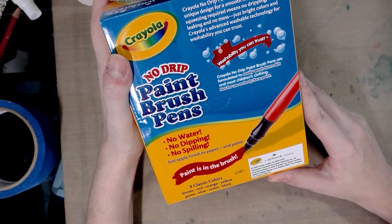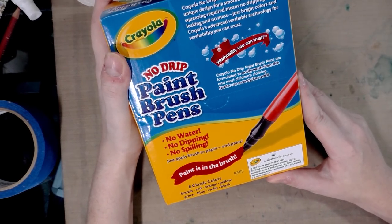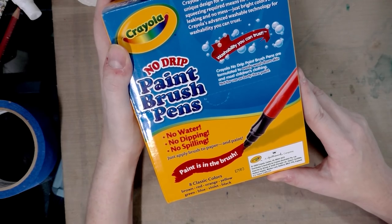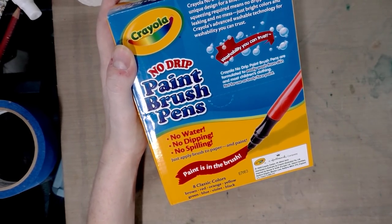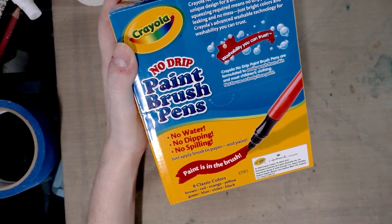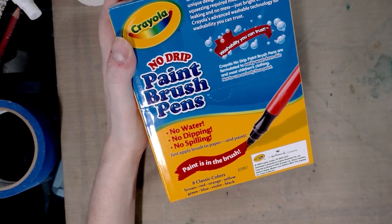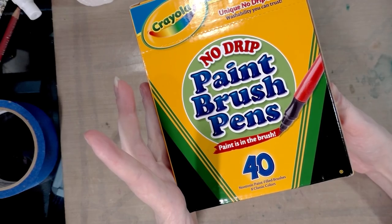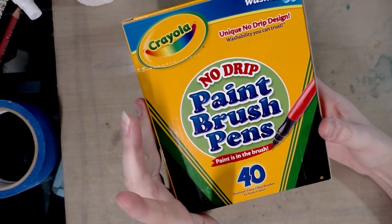Their washable technology tends to be glycerin and dye. Crayola no-drip paint pens are formulated to easily wash from skin and most children's clothing. Not for use as body or face paint. No water, no dipping, no spilling, just apply brush to paper and paint. Paint is in the brush. They say eight classic colors.